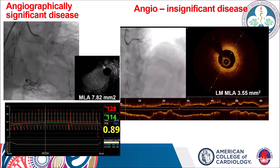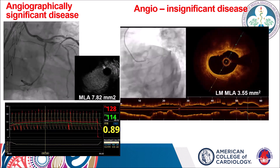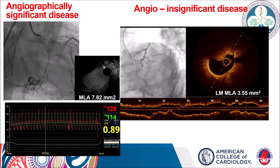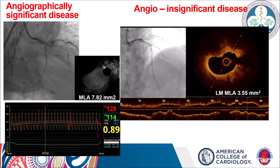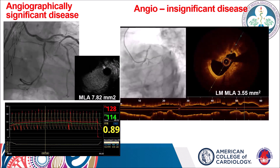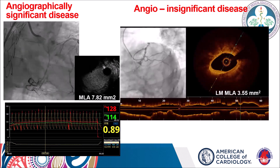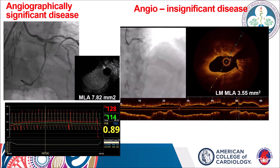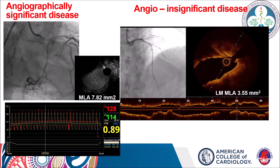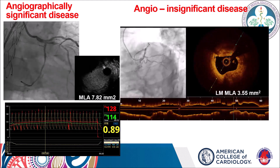These are two illustrative cases. The first shows significant ostial left main disease with damping of pressure, but the MLA across the ostium was 7.82 mm² and the FFR of 0.89 suggests this ostial disease is not significant, requiring only medical treatment. In the other case, angiography did not appear significantly diseased despite some calcification and filling defect, but OCT demonstrated an MLA of 3.5 mm² across the calcified nodule, indicating the need for revascularization.